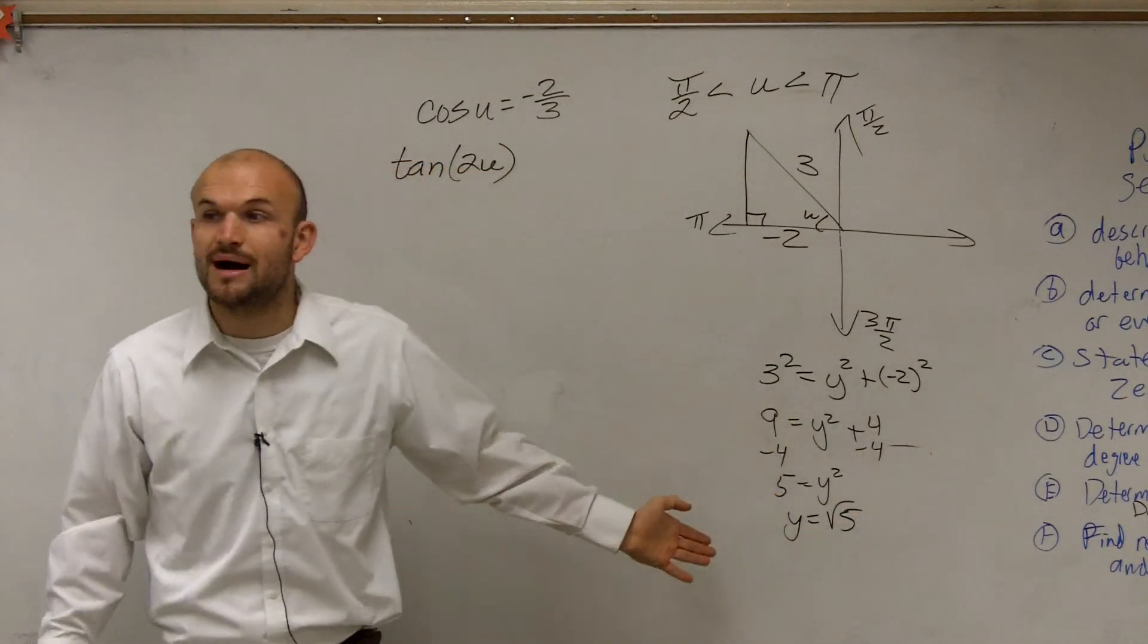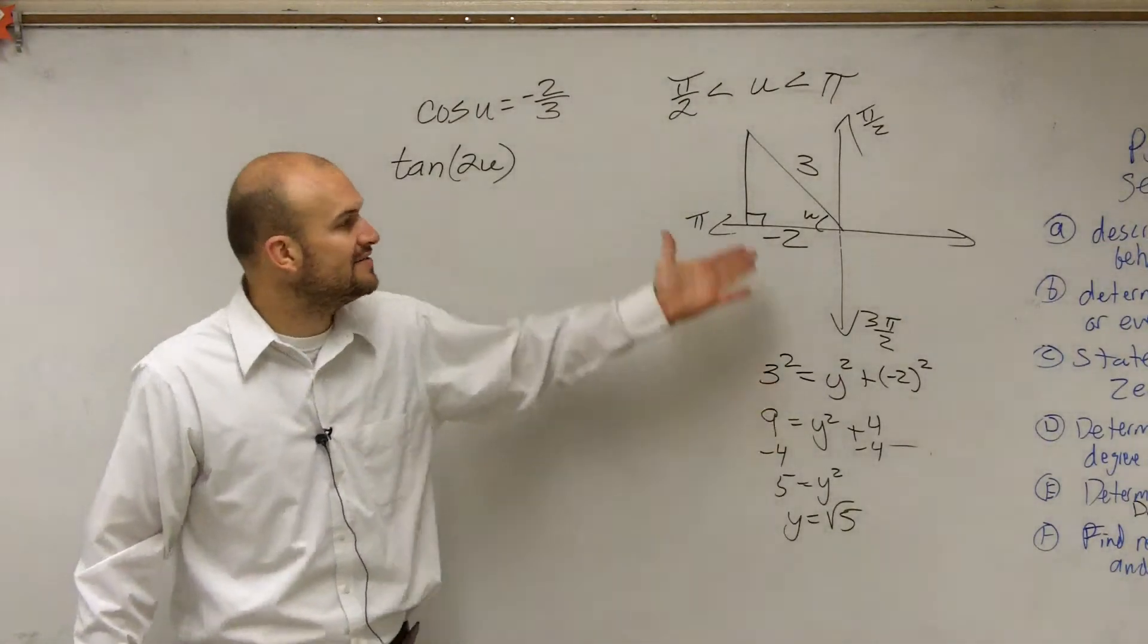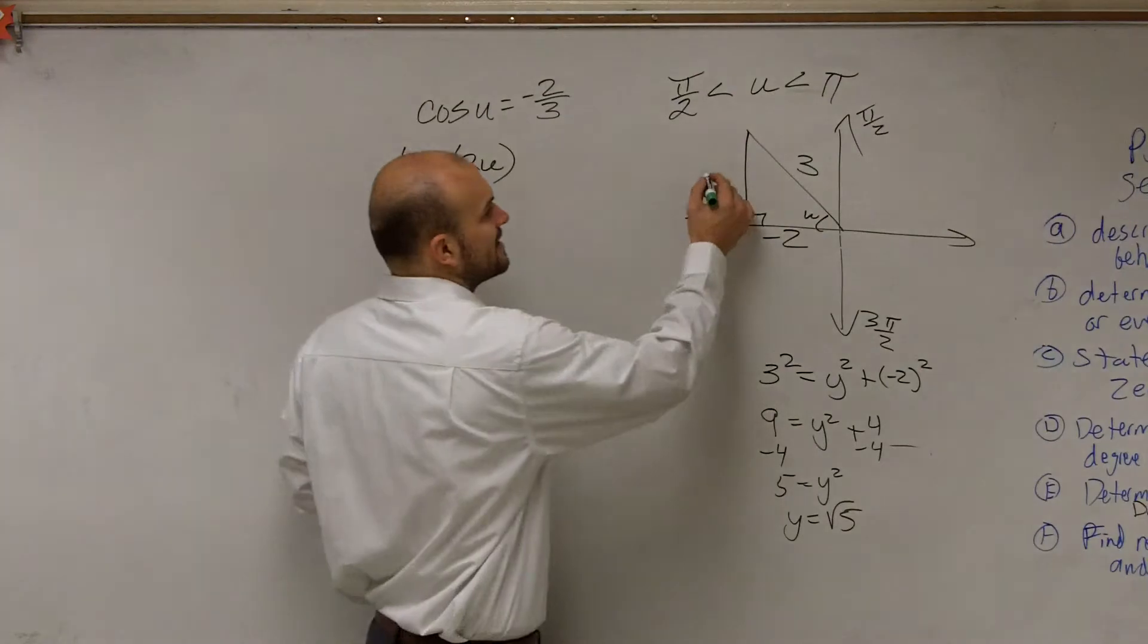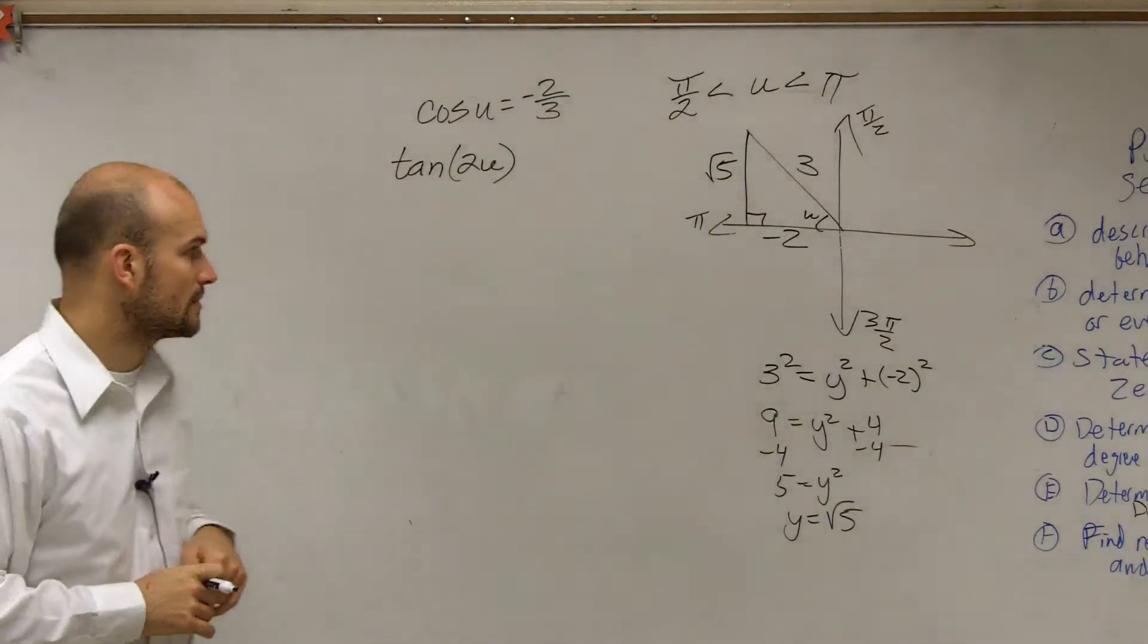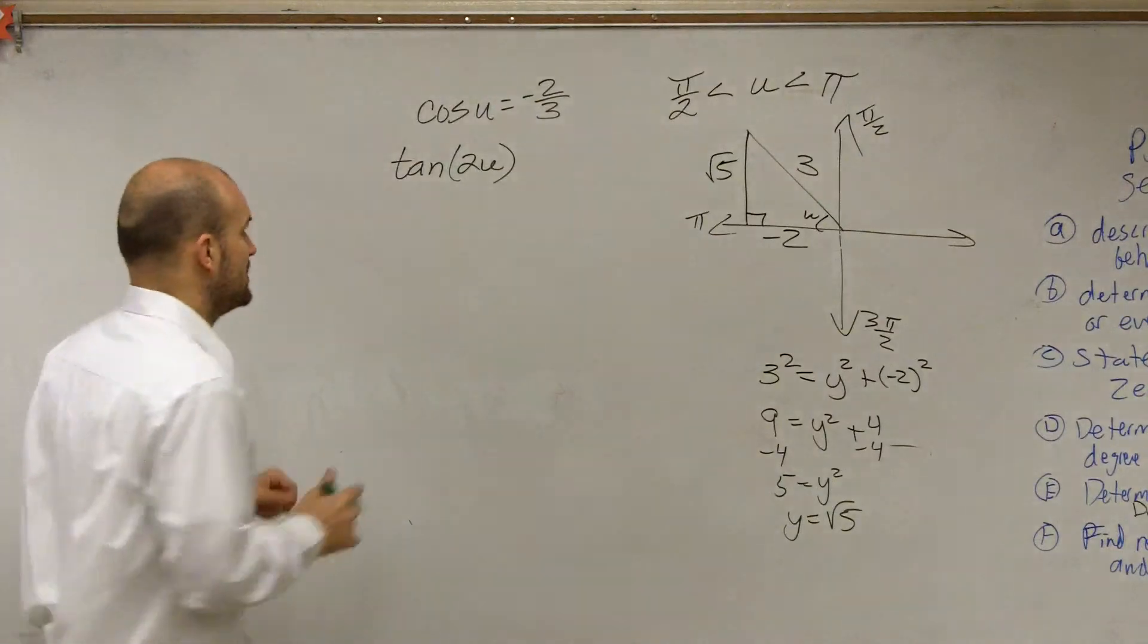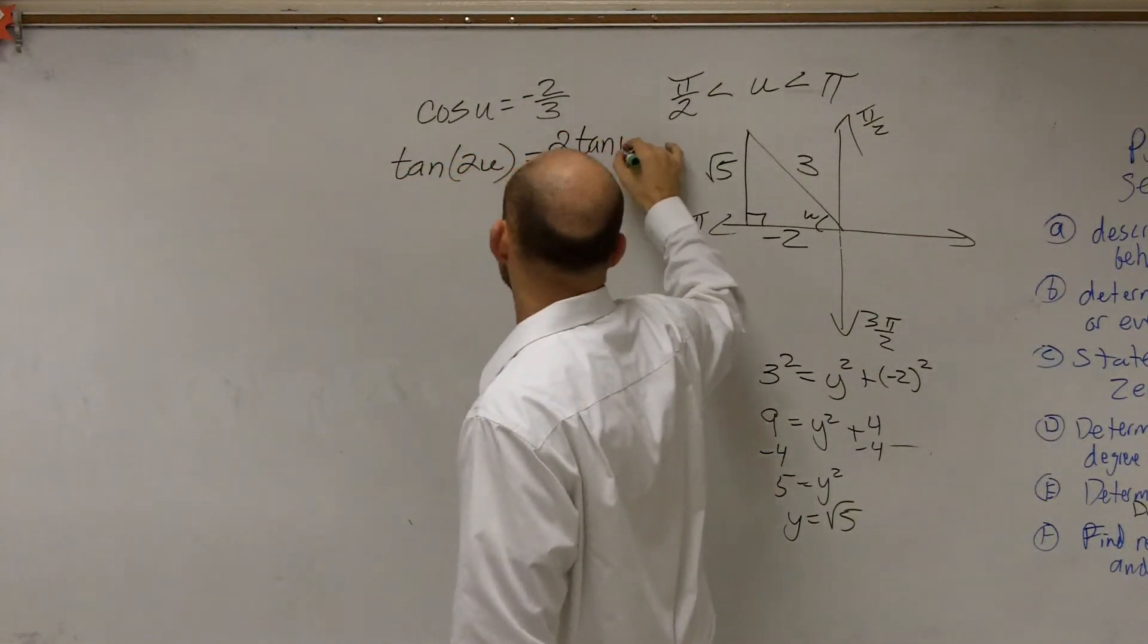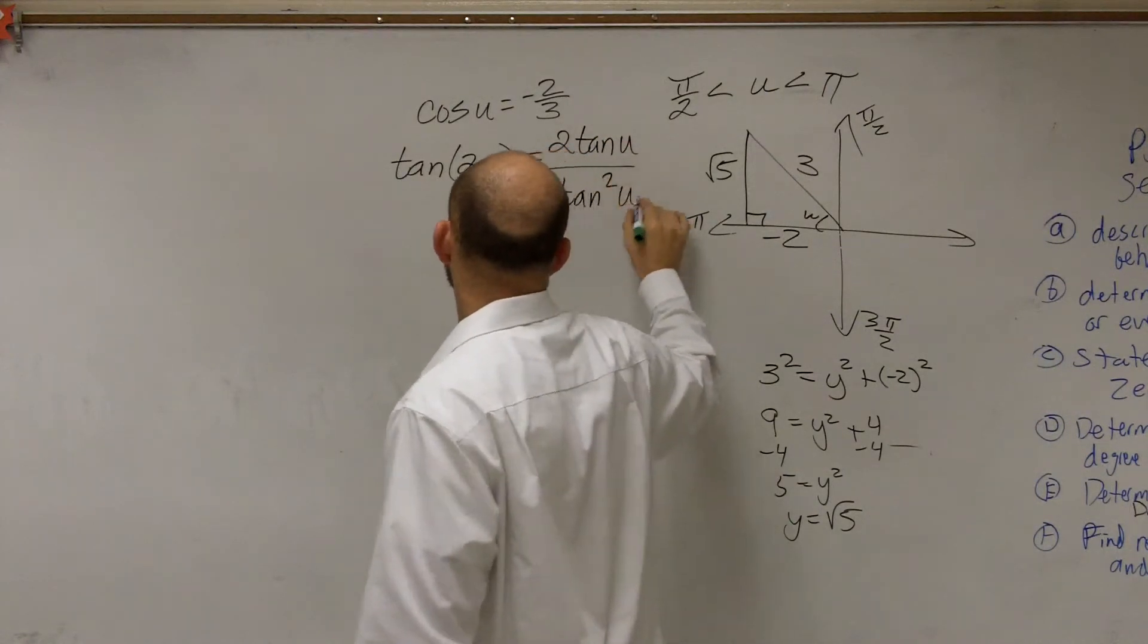You could say, well, it's plus or minus, right? You take the square root, plus or minus the square root of 5. But since we have the constraint of it has to be in quadrant 2, we know that this is a positive √5. So the formula for tangent of 2u is 2 tan(u) divided by 1 - tan²(u).